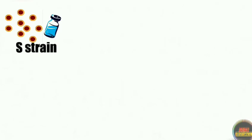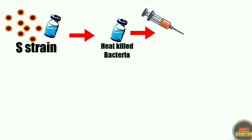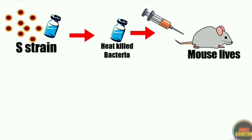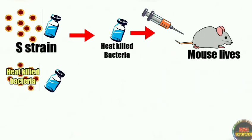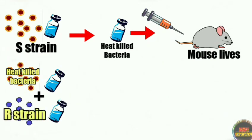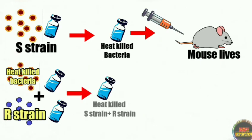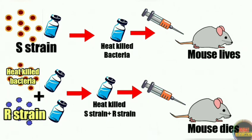Then Griffith again took the S-strain bacteria and this time he heated or boiled it to heat-kill the S-strain bacteria. After heat-killing, he injected this heat-killed S-strain into another mouse, and this time the mouse survived because the bacteria were heat killed. Then again Griffith took the heat-killed S-strain bacteria and mixed it with living R-strain bacteria, and after mixing, he injected this mixture into the body of another mouse. This time the mouse died of pneumonia.